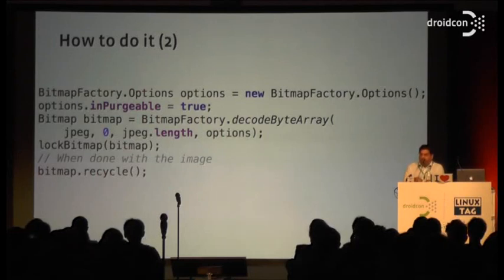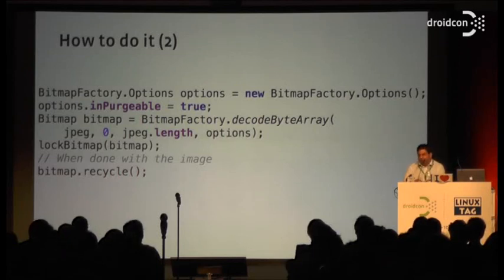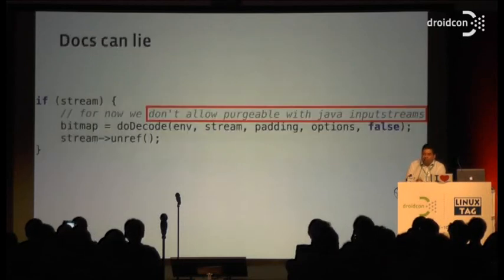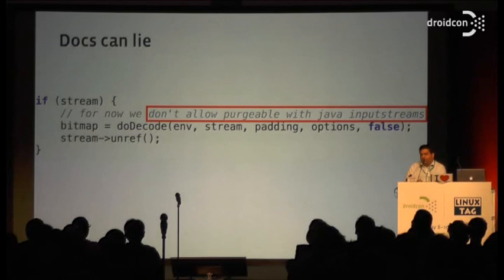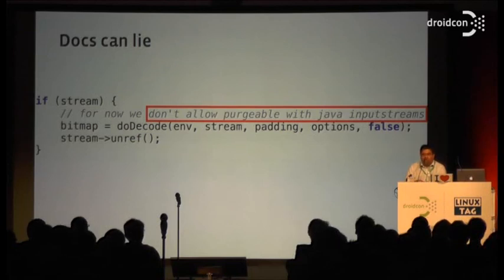You set the inPurgeable option to true, then just lock the bitmap. When you're done with it, you have to call the recycle method, which will free the memory and unlock the bitmap. Of course there are caveats. First, the docs say you can use inPurgeable with any decode method except file and raw resource — they are wrong. You cannot decode from a stream reader. We found this out the hard way. We went through the Android source code and found a comment: we don't allow inPurgeable for these things. You have to decode from a byte array or a file descriptor, not a file. Otherwise you cannot get inPurgeable.